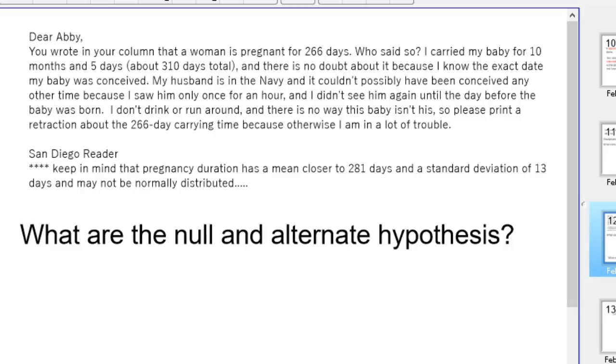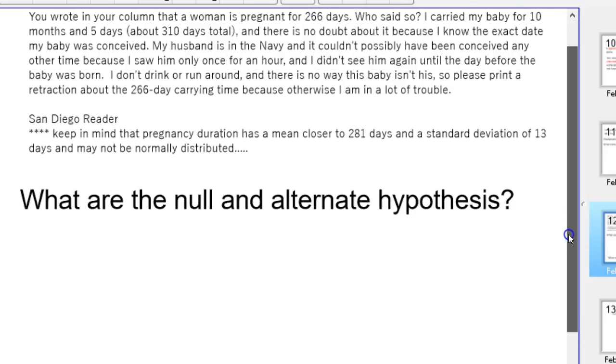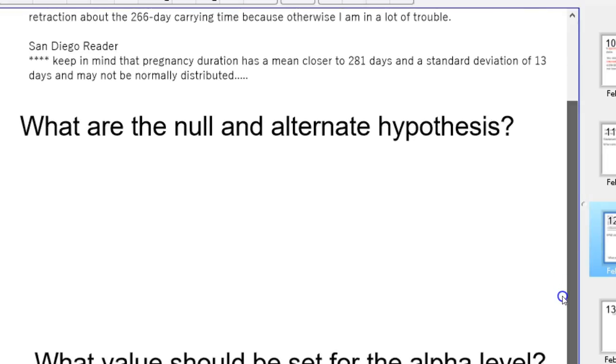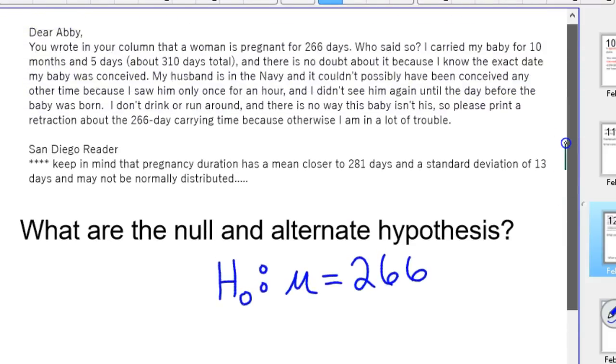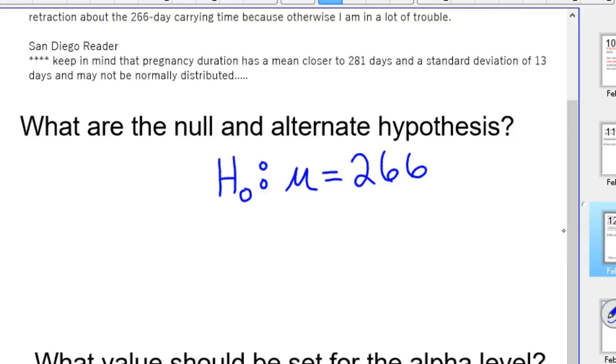So what are our null and alternative hypothesis in this case? The null hypothesis is, remember, you always assume no change. So we're going to assume Dear Abby is right, and the mean duration of pregnancy is 266 days. Since our reader had a pregnancy duration much bigger than that, our alternative hypothesis is going to be we're going to test it against it being greater than 266 days.